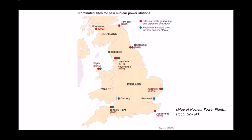Next we have the sites of our nuclear power stations. Two things are indicated: sites that are currently generating — with the expected closure date shown in brackets — and our potential future sites. You'll notice that some potential sites are actually in the same locations as the current sites. All of these will be feeding into the National Grid at 400 kilovolts and 50 Hertz.